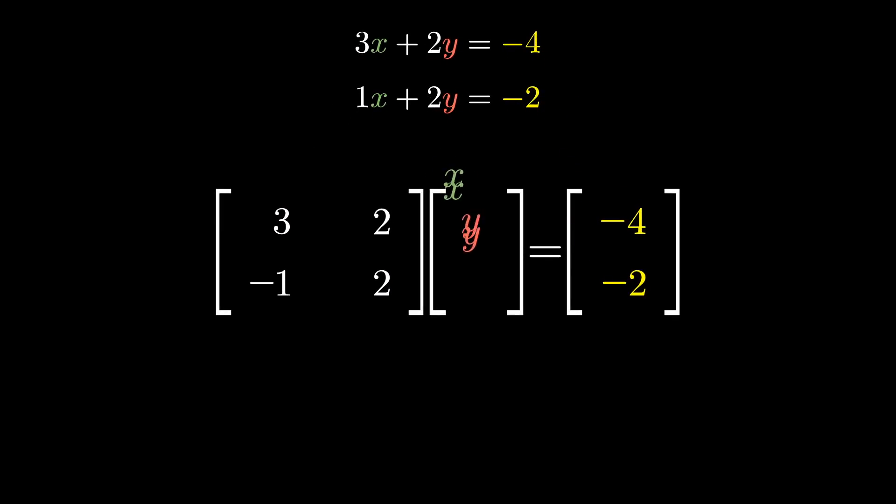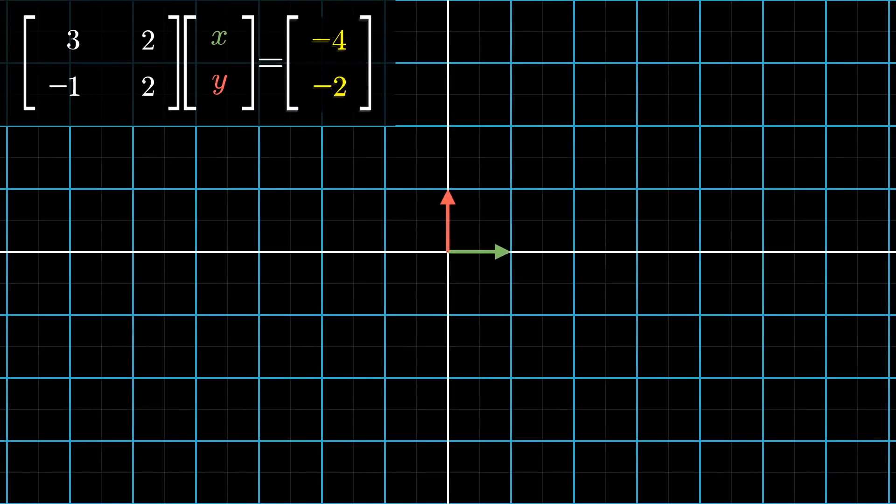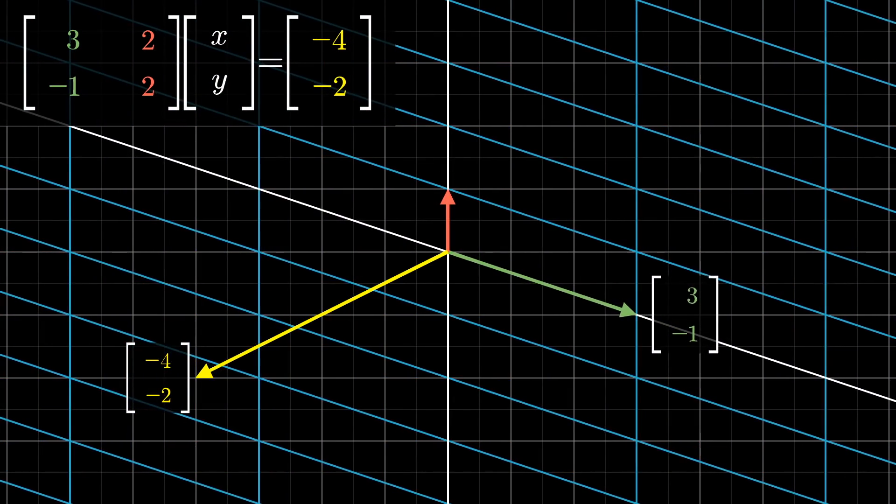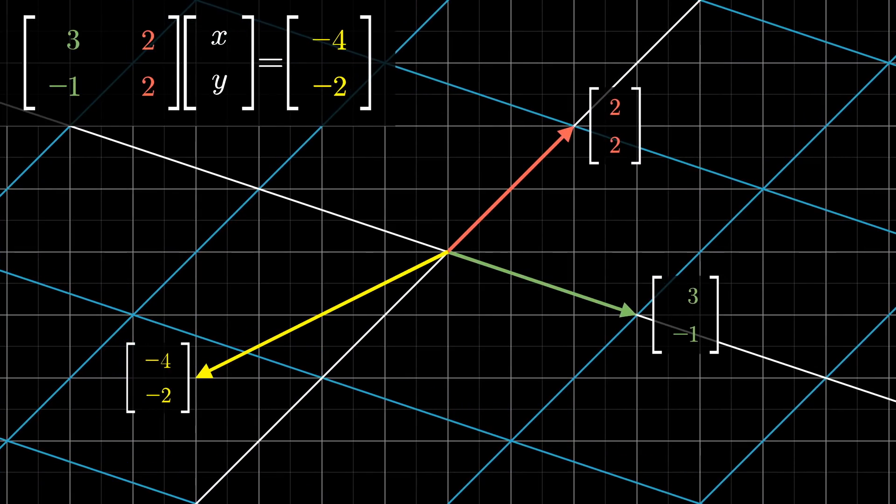So as I talked about in a previous video, you can think of this setup geometrically, as a certain known matrix transforming an unknown vector, x, y, where you know what the output is going to be. In this case, negative four, negative two. Remember, the columns of this matrix are telling you how that matrix acts as a transform, each one telling you where the basis vectors of the input space land.